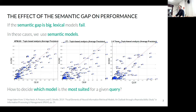Each dot is a query from the Robust collection. Part of them are above the diagonal, meaning the semantic model performs better, while others are below it, where the lexical model is better. It is hard to say only a single model is the best. There is a strong division between types of queries. If we were able to decide which model is best suited for a specific query, we could obtain much better results.